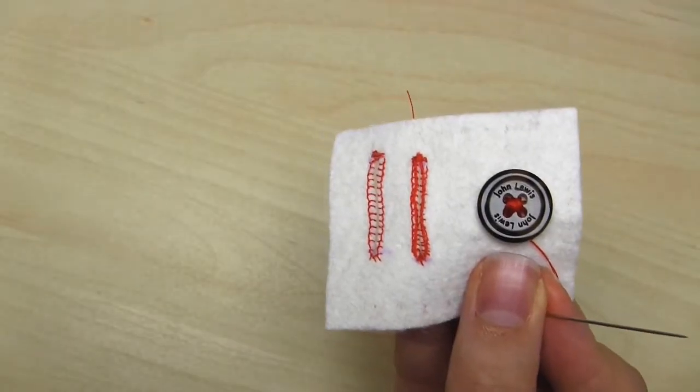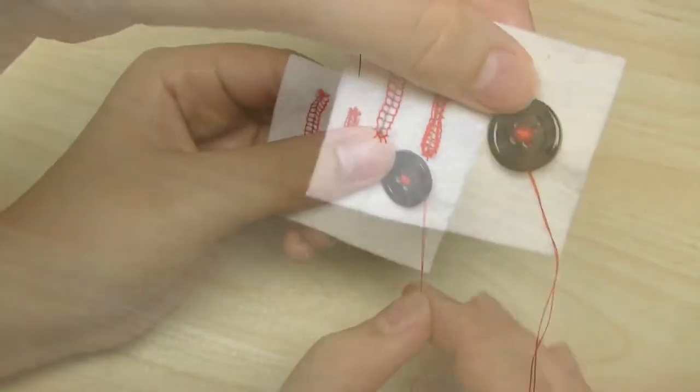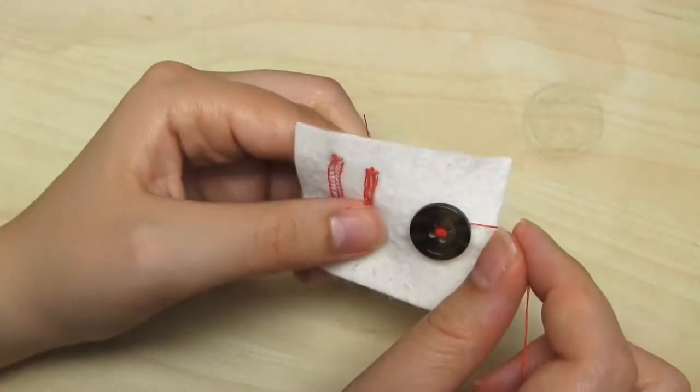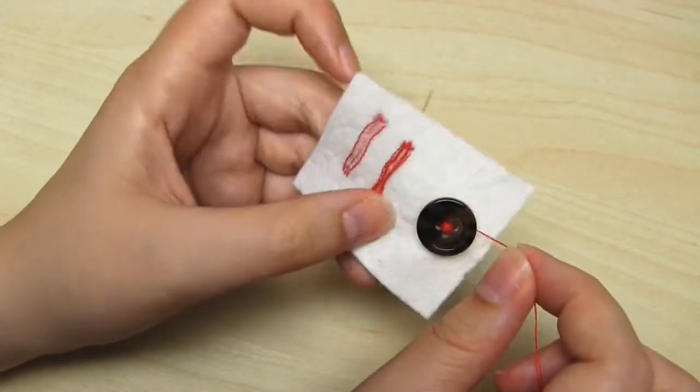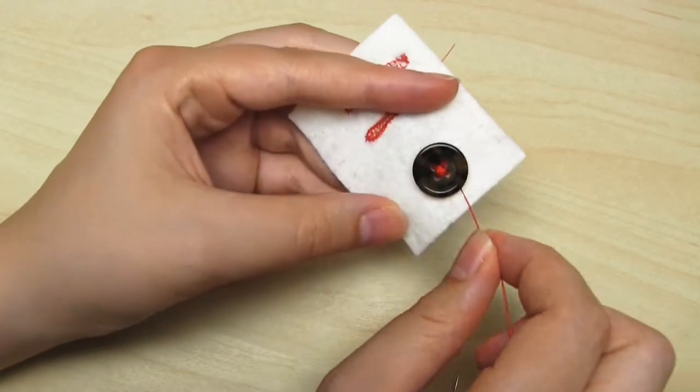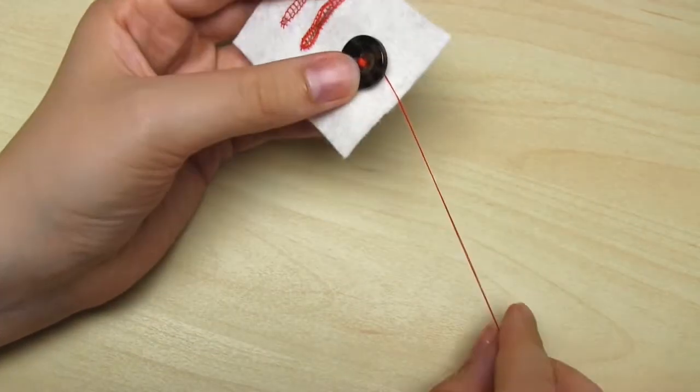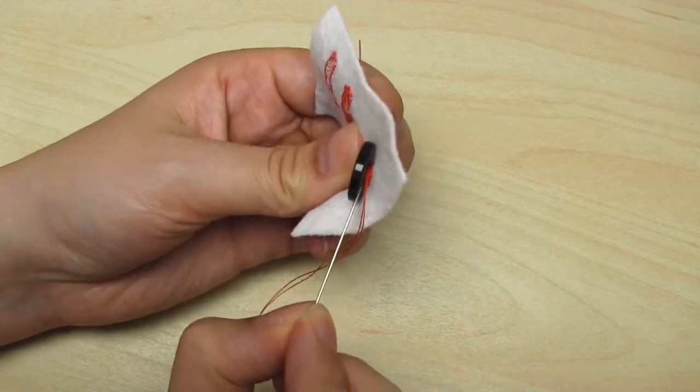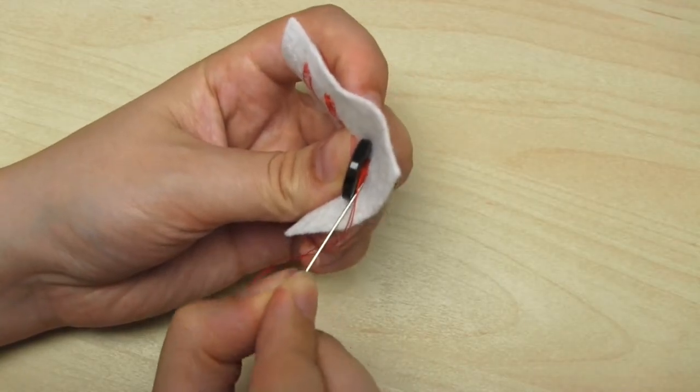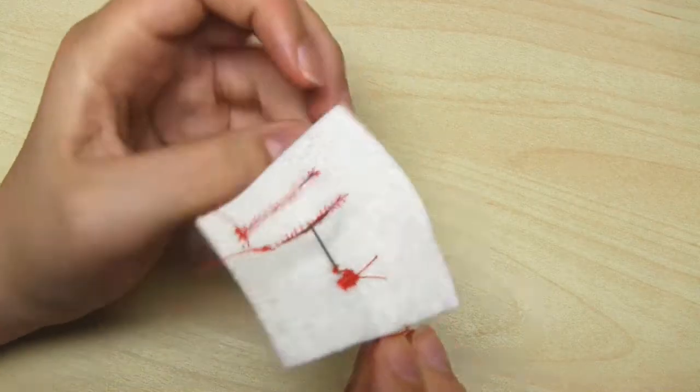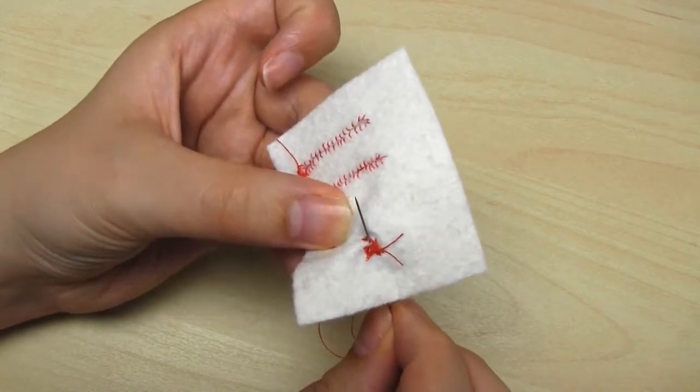And wrap the thread around the button tightly several times. The reason for using that large needle was to provide spacing between the button and the fabric. So once you've done the thread wrapping, take your needle back down through the fabric. And then all we need to do is secure the end of the thread.